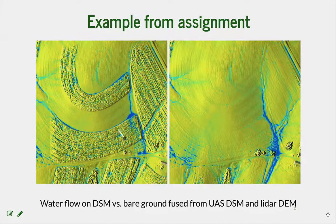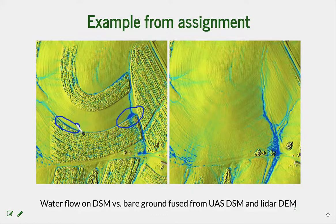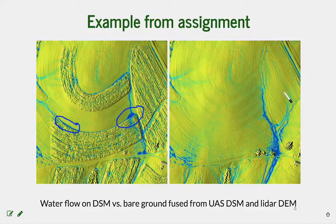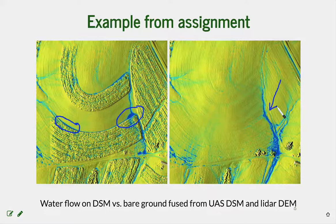We also discussed the artificial ponding along the boundary with the crop area. We can replace that crop area with a digital elevation model that has bare ground, and then we get much more realistic surface water flow after the fusion with variable boundaries. You can see that this issue is now resolved because we have replaced the vegetated cover with bare ground.